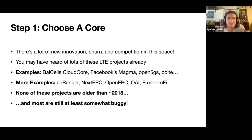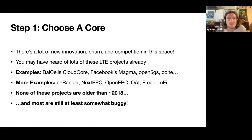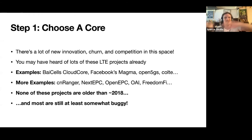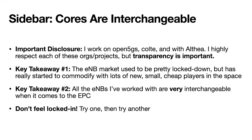The radio space has become commodified with lots of small competitors, which means you're seeing some bugs but also prices coming down. Radios are pretty interchangeable. The names flying high in these projects all run a core network. There's Bicel's cloud core, Facebook's Magma which is kind of hybrid, Open5GS and Colty, CN Ranger, Next EPC, Open EPC — which is not actually open source despite the name — OAI, and FreedomFi, which is a prioritized version of Magma. These are all software core networks — you bring your own eNodeBs.